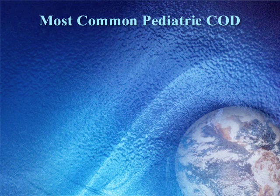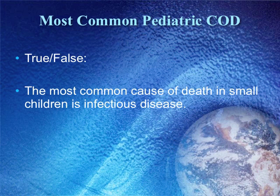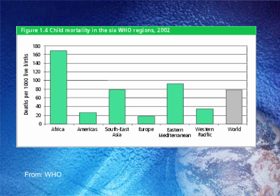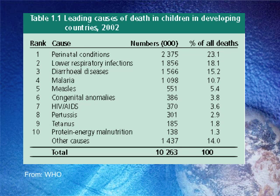True or false: the most common cause of death in small children worldwide is infectious disease. Everyone agrees: true. In 1998, two-thirds of all deaths in small children were due to infectious disease. Leading causes of death in children in developing countries include lower respiratory infections, diarrheal diseases, malaria, measles, HIV-AIDS, pertussis, and tetanus. Africa, particularly Sub-Saharan Africa, leads child mortality rates.